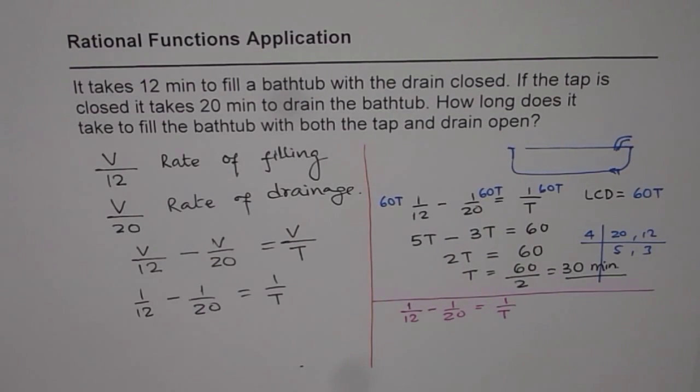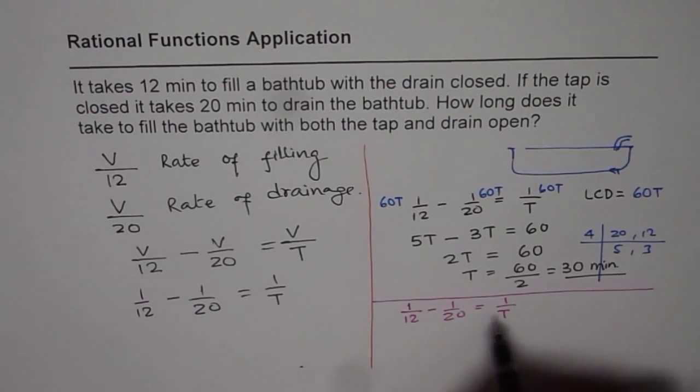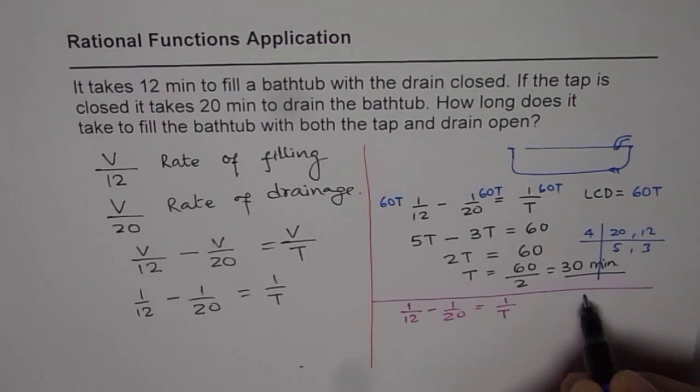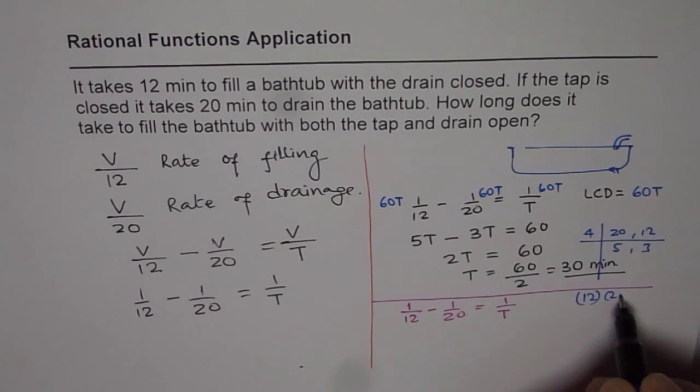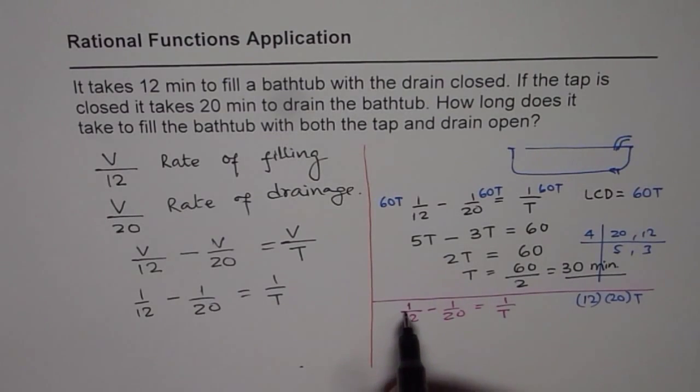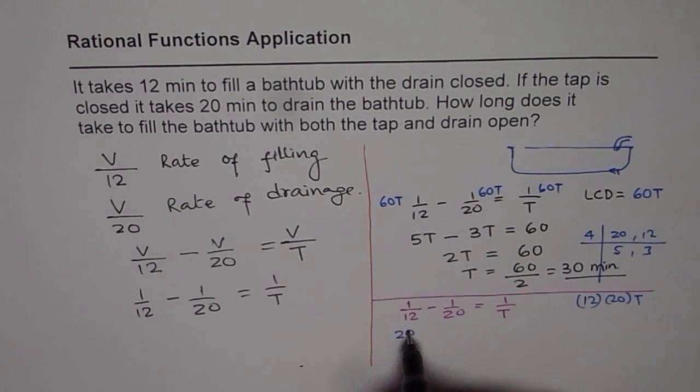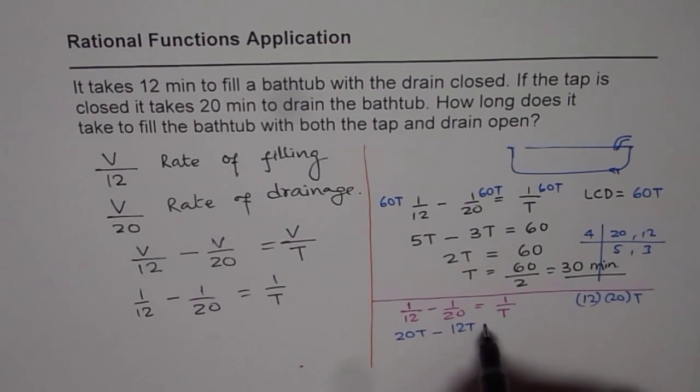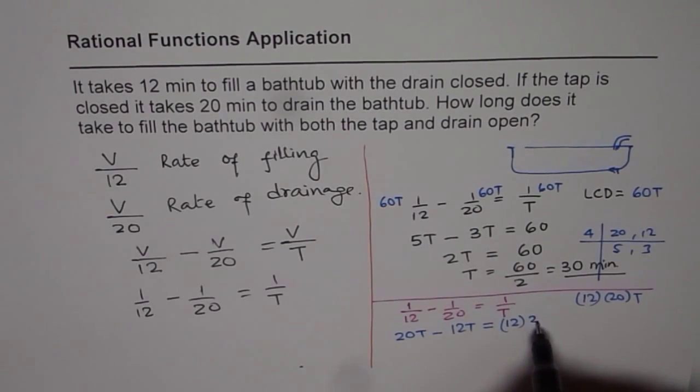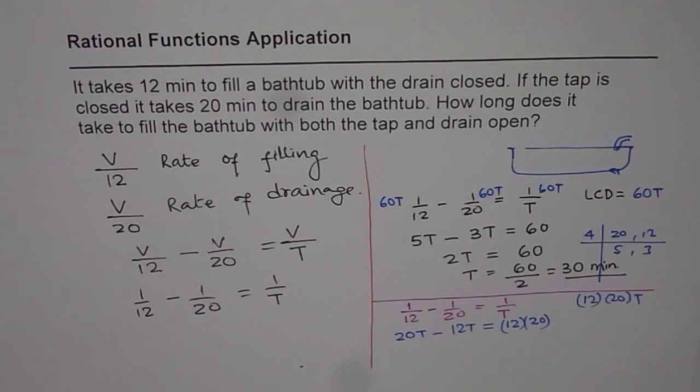If I multiply everything by 12 times 20 times T, then what do I get here? Here I will get 20T. So I get 20T minus 12T equals to 12 times 20. Is that okay? That is how it is going to be.